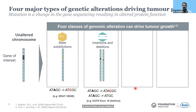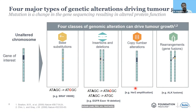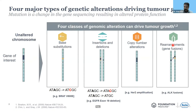Then you have copy number alterations, where the number of copies of a gene in a chromosome increases — examples include HER2 and MYC. And lastly, you have gene fusions, where a translocation event occurs: a chromosome gets cut from one gene and fuses near a gene on another chromosome, leading to a fused protein. ALK fusions, NTRK fusions, and ROS1 fusions all fall under this category of gene fusions.